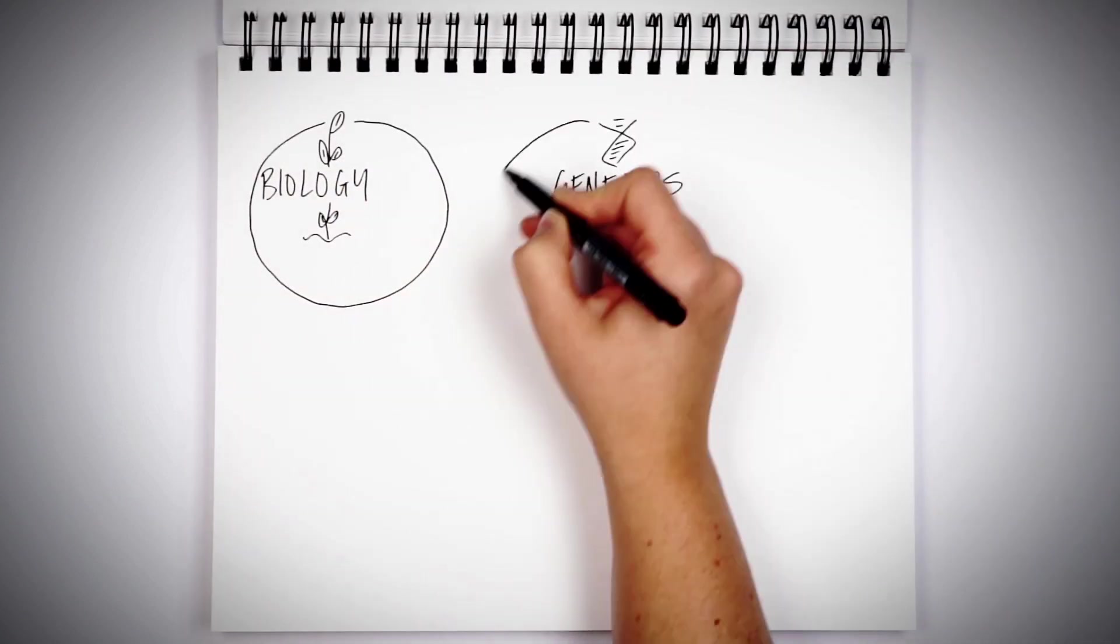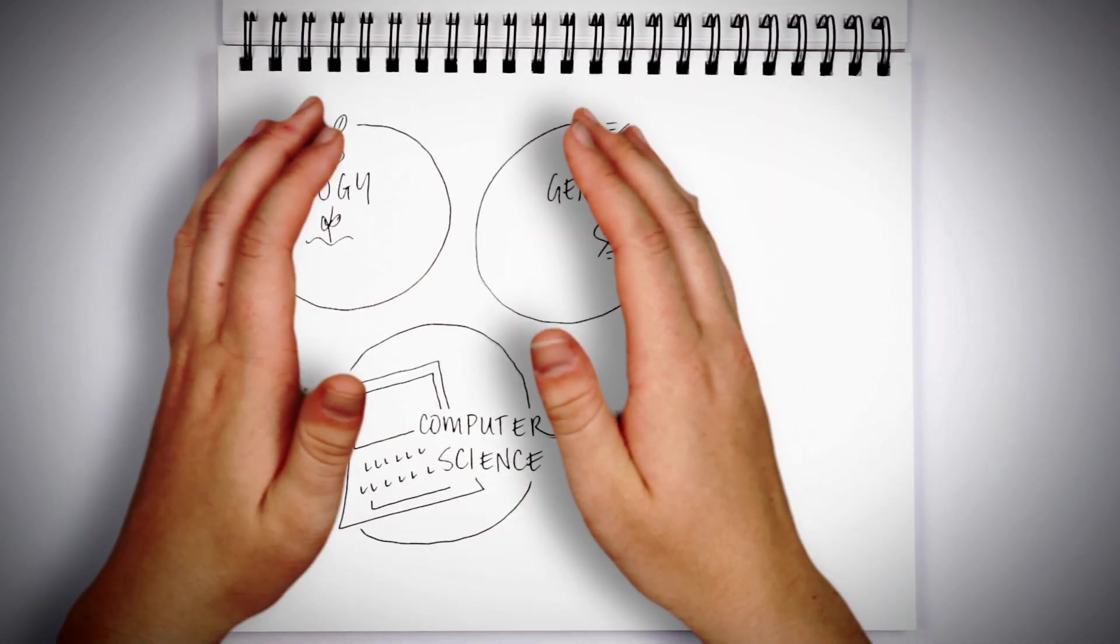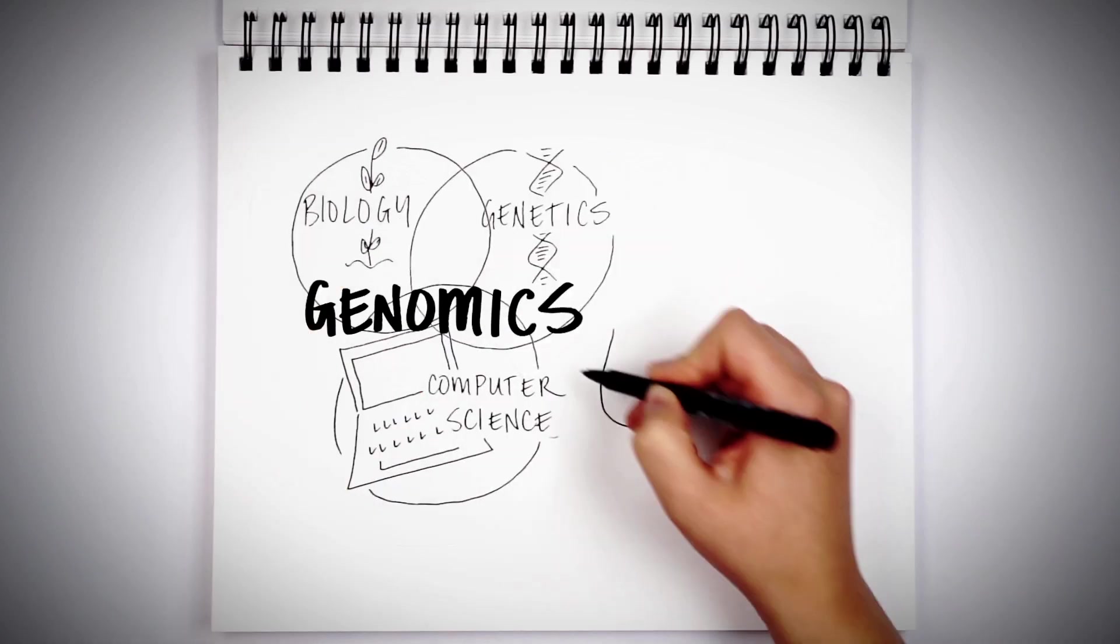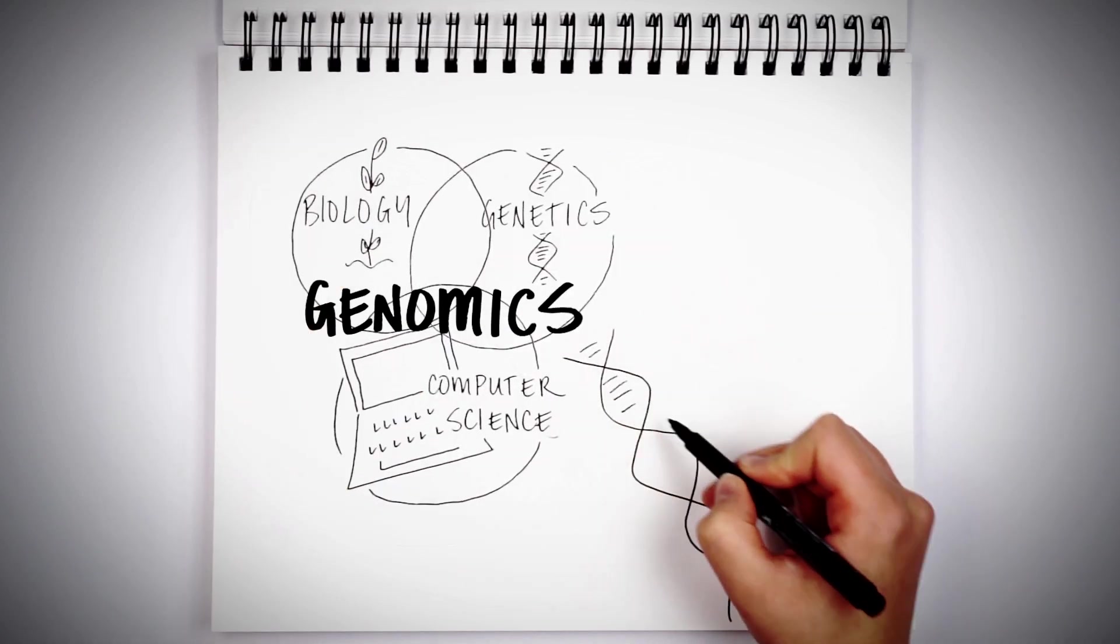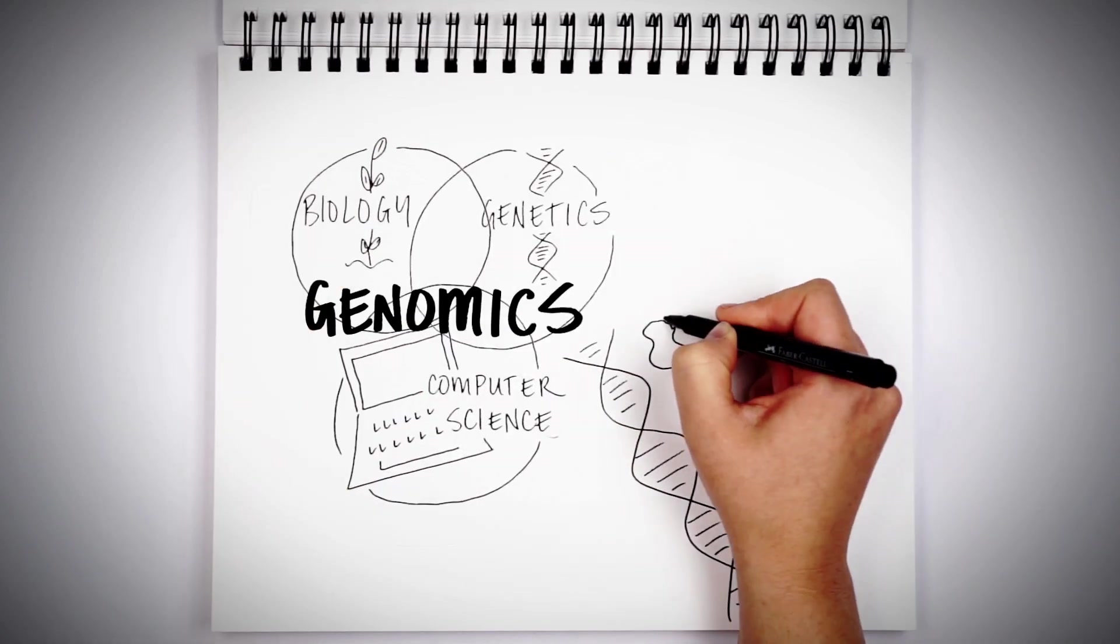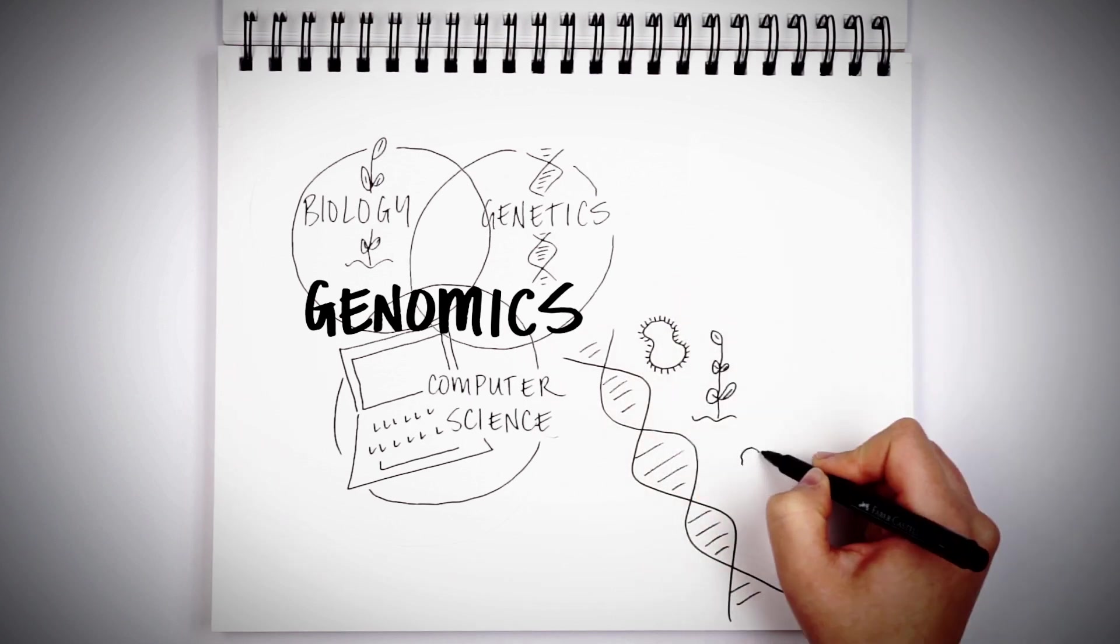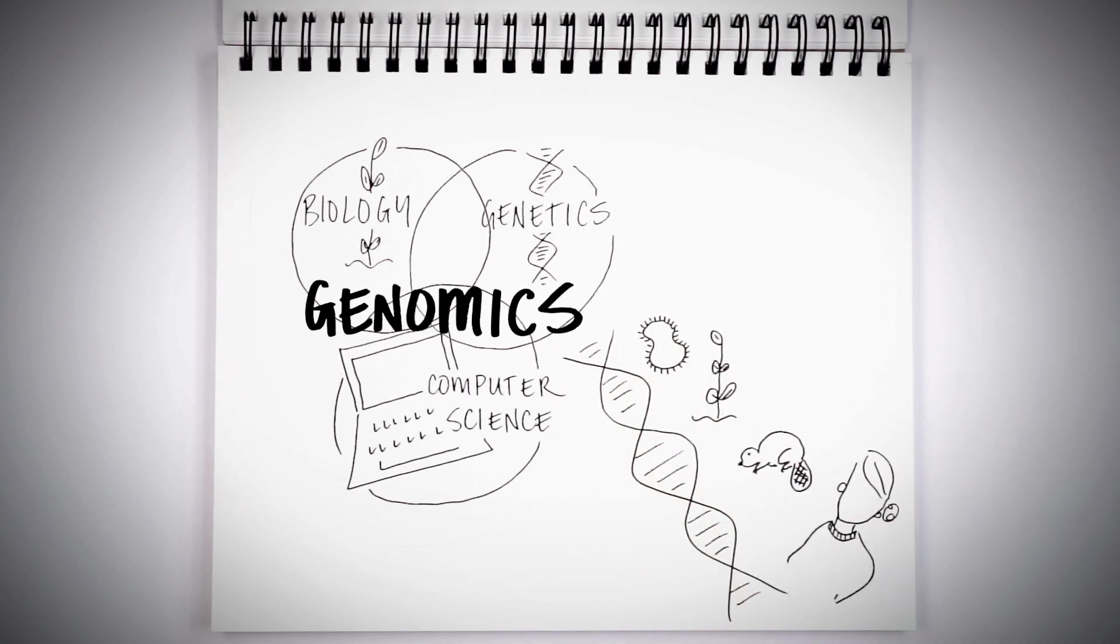Genomics combines biology, genetics, and computer science to give us an in-depth look at the DNA in all living organisms. In the environmental space, that means everything from single-celled microbes to plants, animals, and humans.